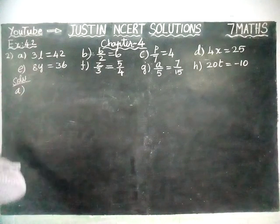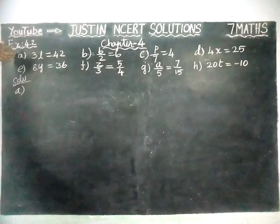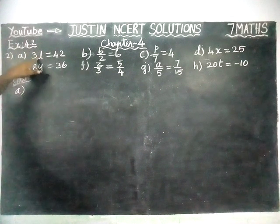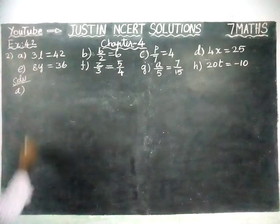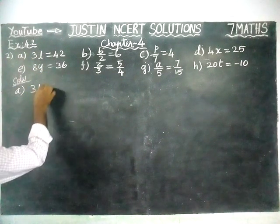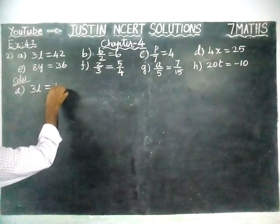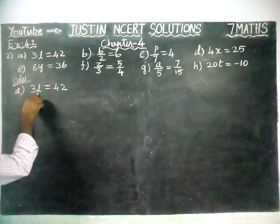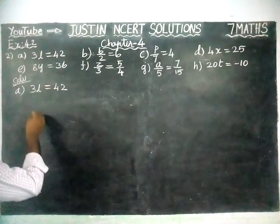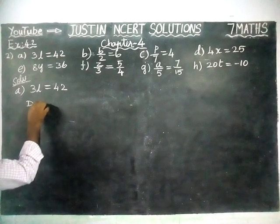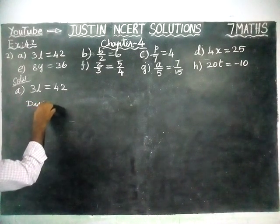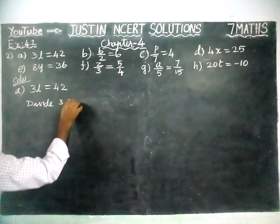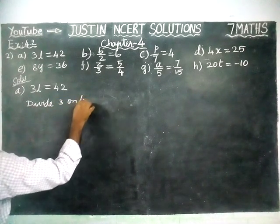In the first question, we saw addition and subtraction. Now we are going to see multiplication and division. First sum: 3L is equal to 42. To separate this variable, we have to divide this number by 3. So, divide 3 on both sides.